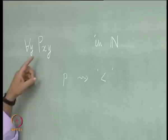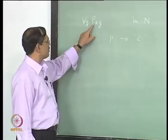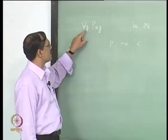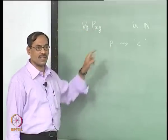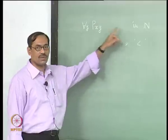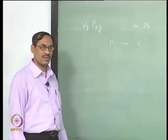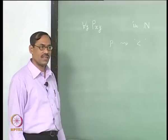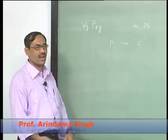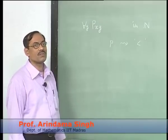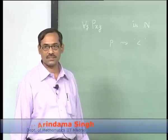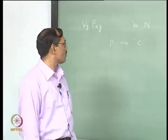If you translate this sentence, it will look like: for each y, x is less than y. So that y will be varying over natural numbers now. When you say 'for each y', you have only natural numbers, nothing else. So, for every natural number, the sentence will be: for every natural number, x is less than y.